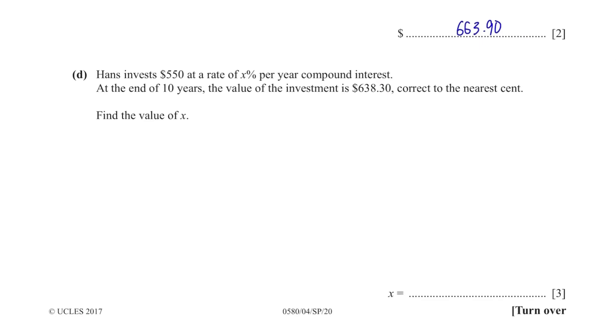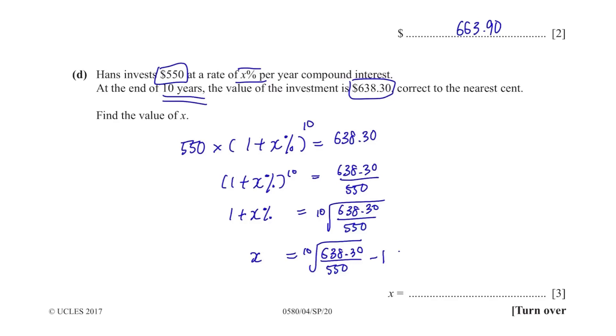Part D. Hans invest $550 at a rate of x% per year compound interest. At the end of 10 years, the value of the investment is $638.30 correct to the nearest cent. This time we know the original and the final value but we need to find the rate per year. So use the same formula and substitute the values that we know. The original price, $550 times 1 plus the rate, x% to the power of 10 because it's for 10 years, equals to $638.30. Rearrange the equation to find x. 1 plus x to the power of 10 equals to $638.30 over $550. Then 1 plus x equals to this. X equals to this minus 1 which is 1.50 correct to 3 significant figures.